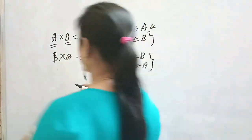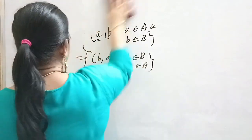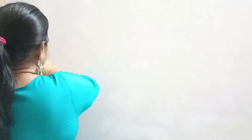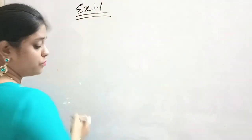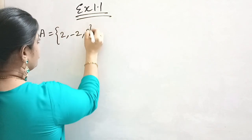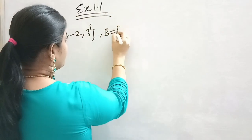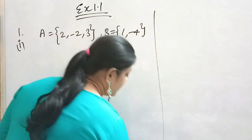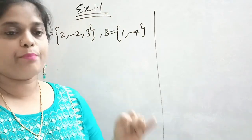First question of exercise 1.1: A set is {2, -2, 3} and B set is {1, -4}. We are given two sets and we are going to find A cross B, A cross A, and B cross A — three results to calculate.